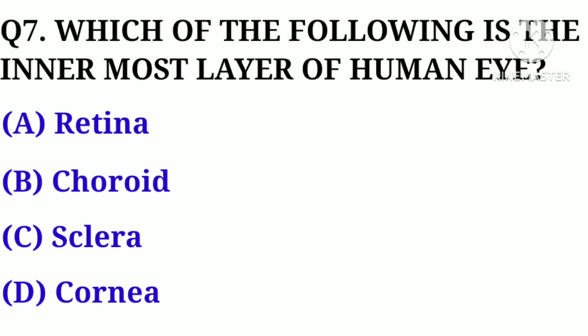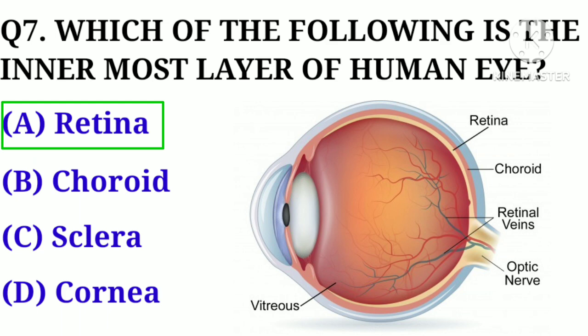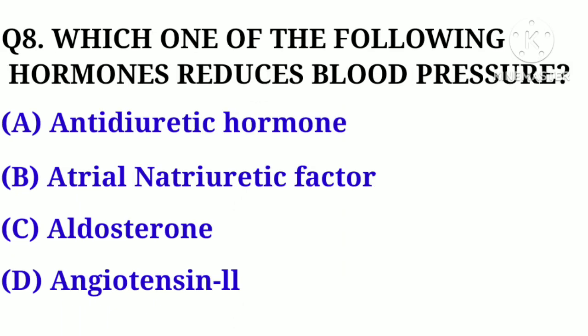Question number 7. Which of the following is the innermost layer of the human eye? Option A. Retina, B. Choroid, C. Sclera, D. Cornea. Correct answer: Option A. Retina.